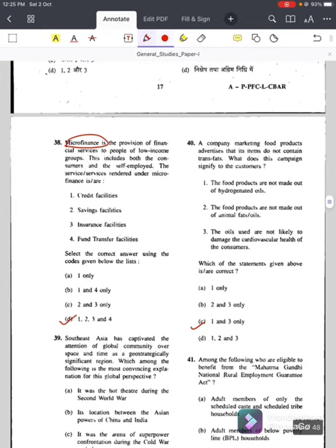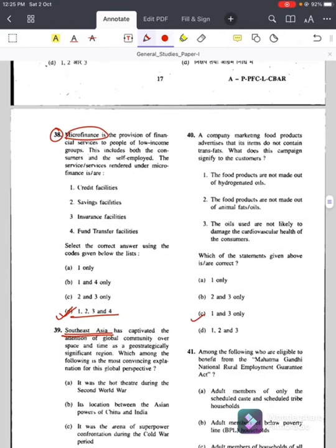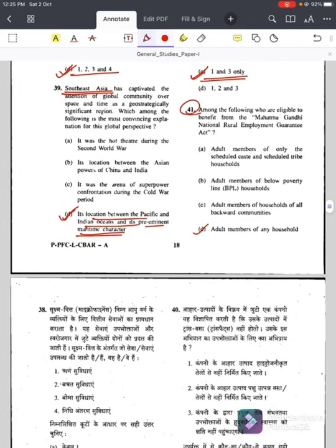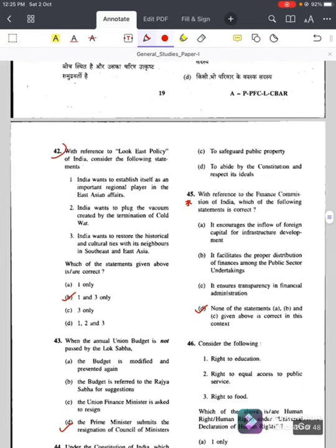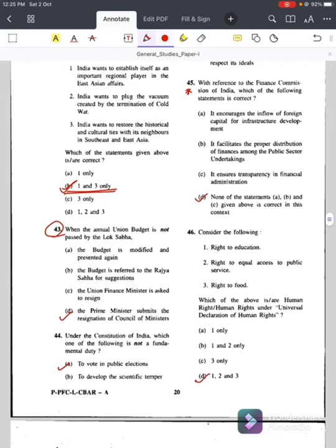Question with respect to India is home to lakhs of persons with disabilities, question number thirty-four, answer is D, one two and three. Question number thirty-five, mega food parks, answer is B, one and two only. Question number thirty-six, Parliament of India, answer is B. Question number thirty-seven, all revenues, answer is C, consolidated fund of India. Microfinance, question number thirty-eight, answer is D, one two three and four. Question number thirty-nine, Southeast Asia, answer is D, its location between Pacific and Indian Ocean and its preeminent maritime character. Question number forty, a company marketing food products, answer is C, one and three only.